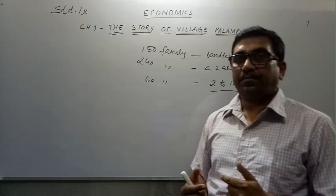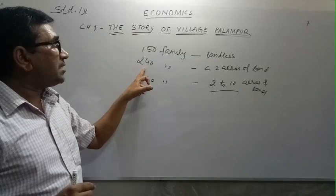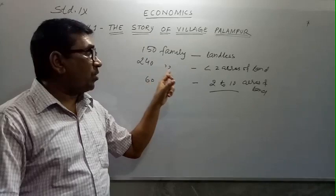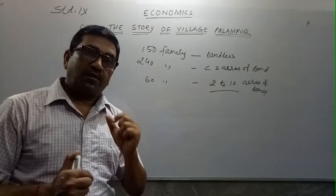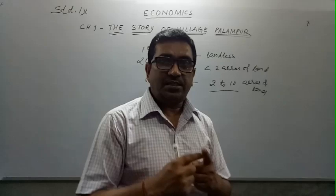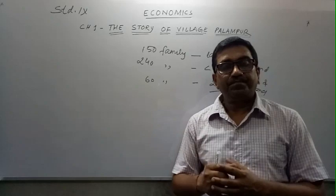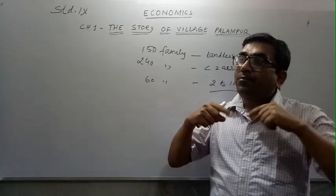The 150 landless families and the 240 marginal families both provide labor. As soon as their own agricultural work is finished they become available for labor elsewhere. Labor is given work in three basic categories: first, they may be hired for daily wages.